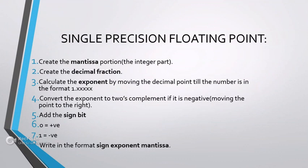My name is O. Today I am going to explain single precision floating point. First point: create the binary representation, that is the integer part. Second point: create the decimal fraction. Third point: calculate the exponent by moving the decimal point until the number is in the correct format. Fourth point: convert the exponent to two's complement.